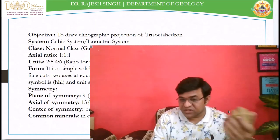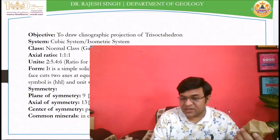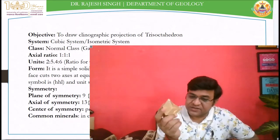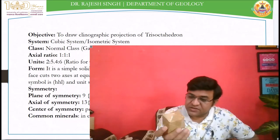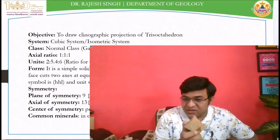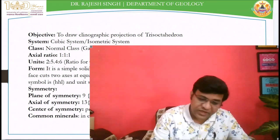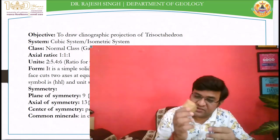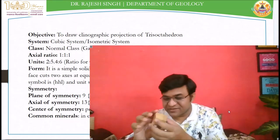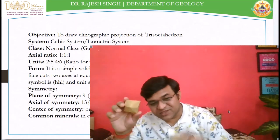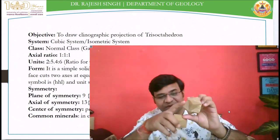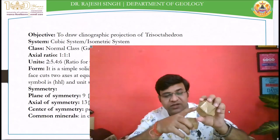In part 2, I have rectified these models, so you can watch part 2 for that. But here, this is the new one — this is the perfect Tricectrahedron. This one is the imperfect one. This is the perfect one because these apices are more prominent than the other one.